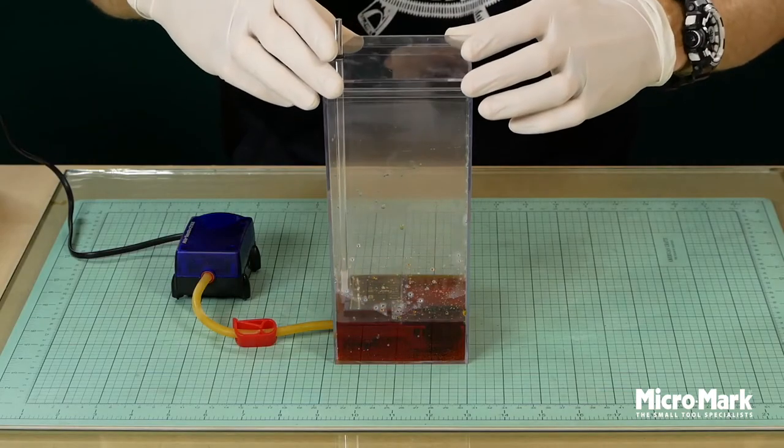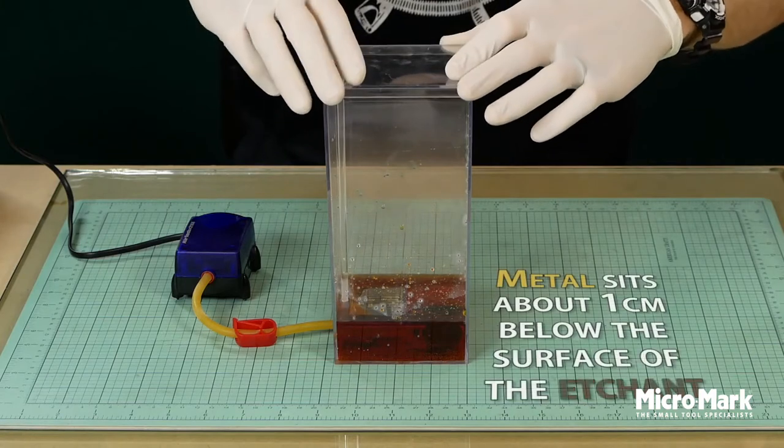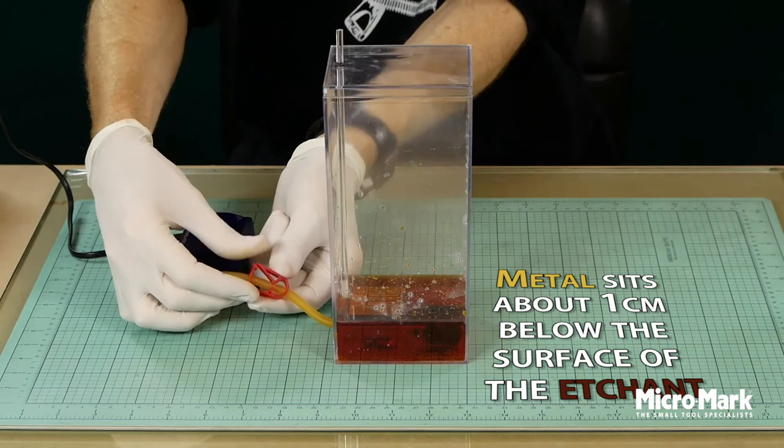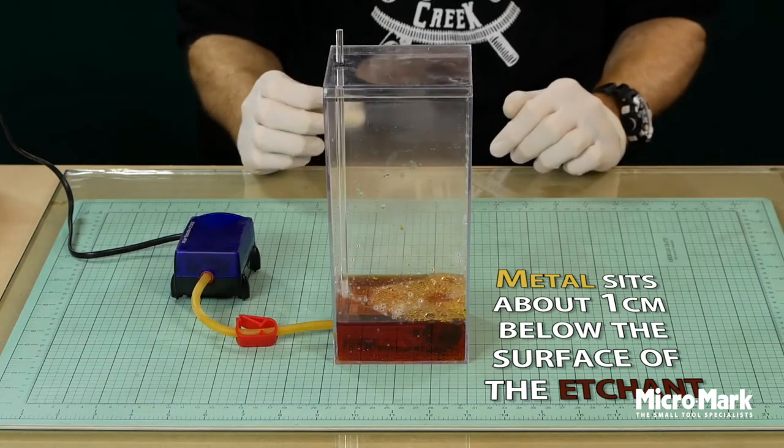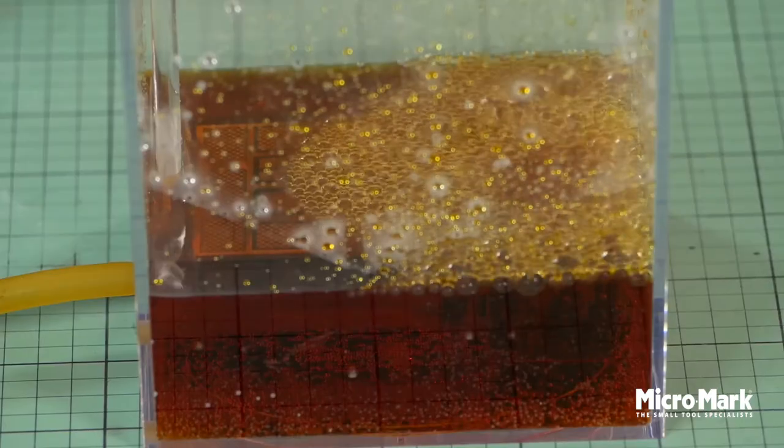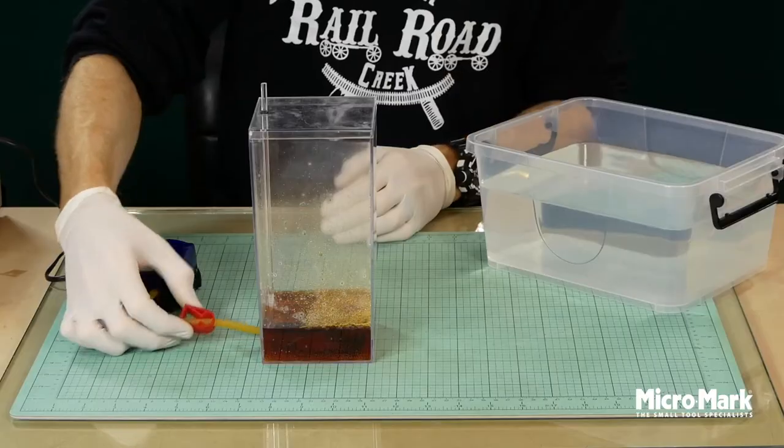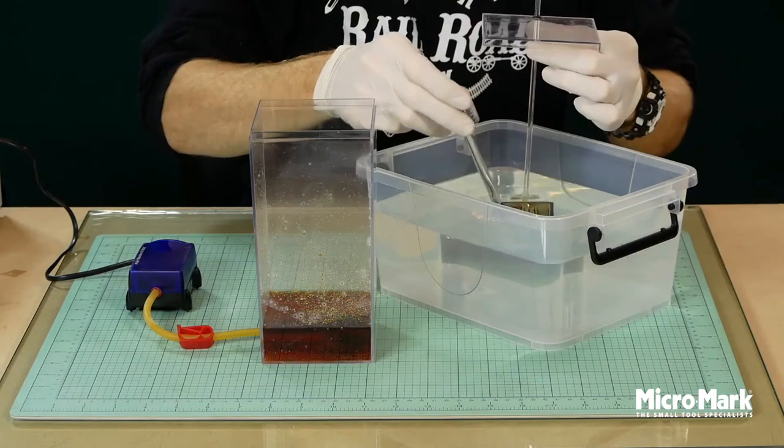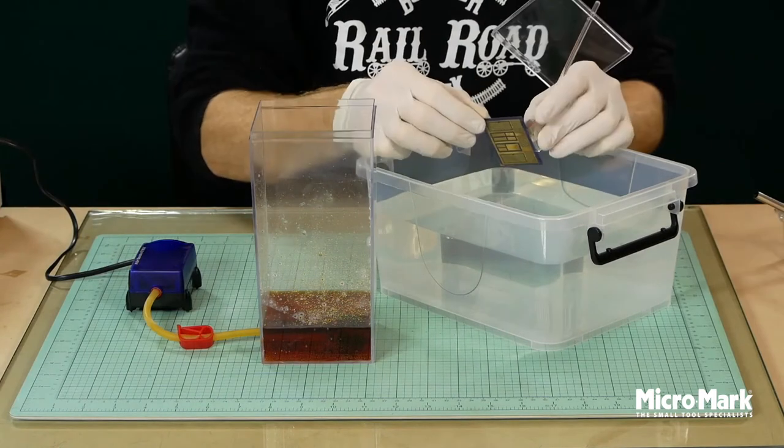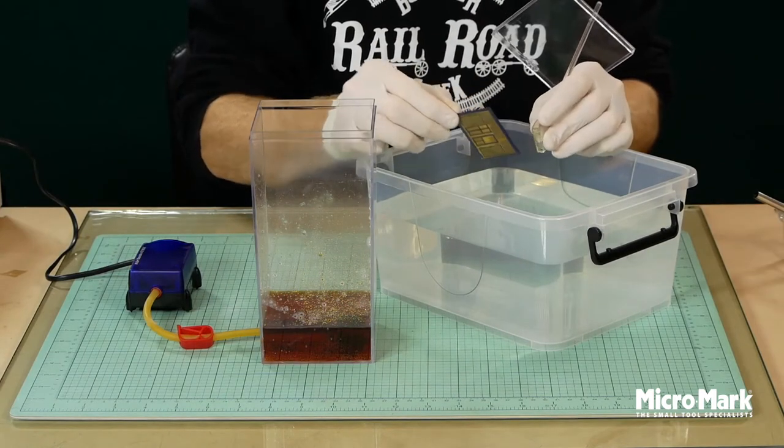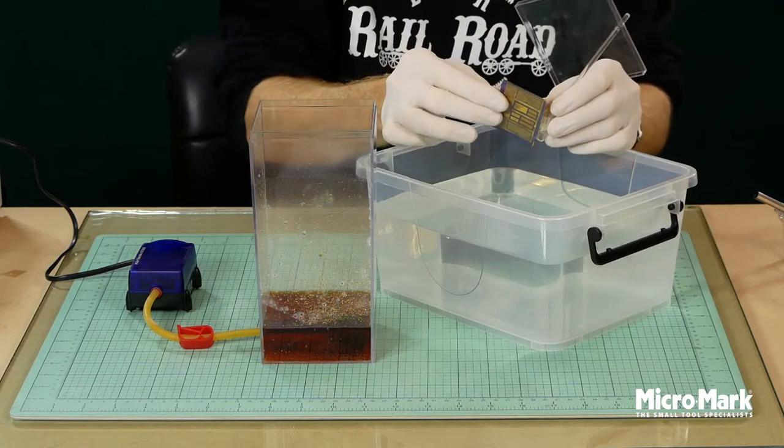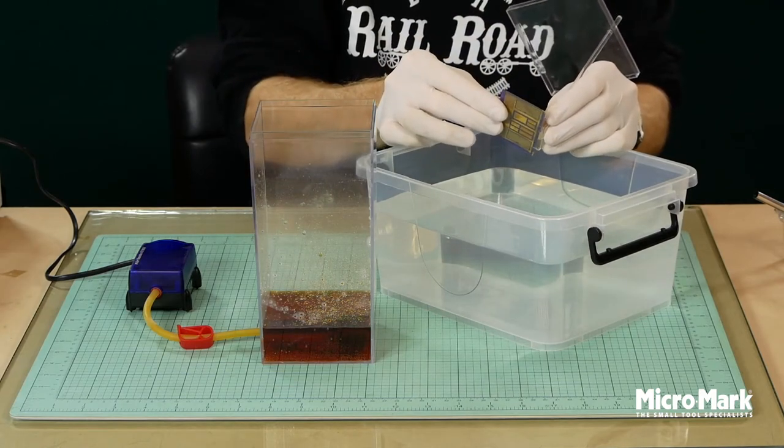Now we're ready to start etching. Insert the metal that's attached to the lid and turn the air pump on. I'll leave it for a few minutes then I'll remove it from the tank, give it a quick rinse and then I'll remove it from the clip and rotate the metal 180 degrees then put it back into the tank. I repeat this process about three or four times.